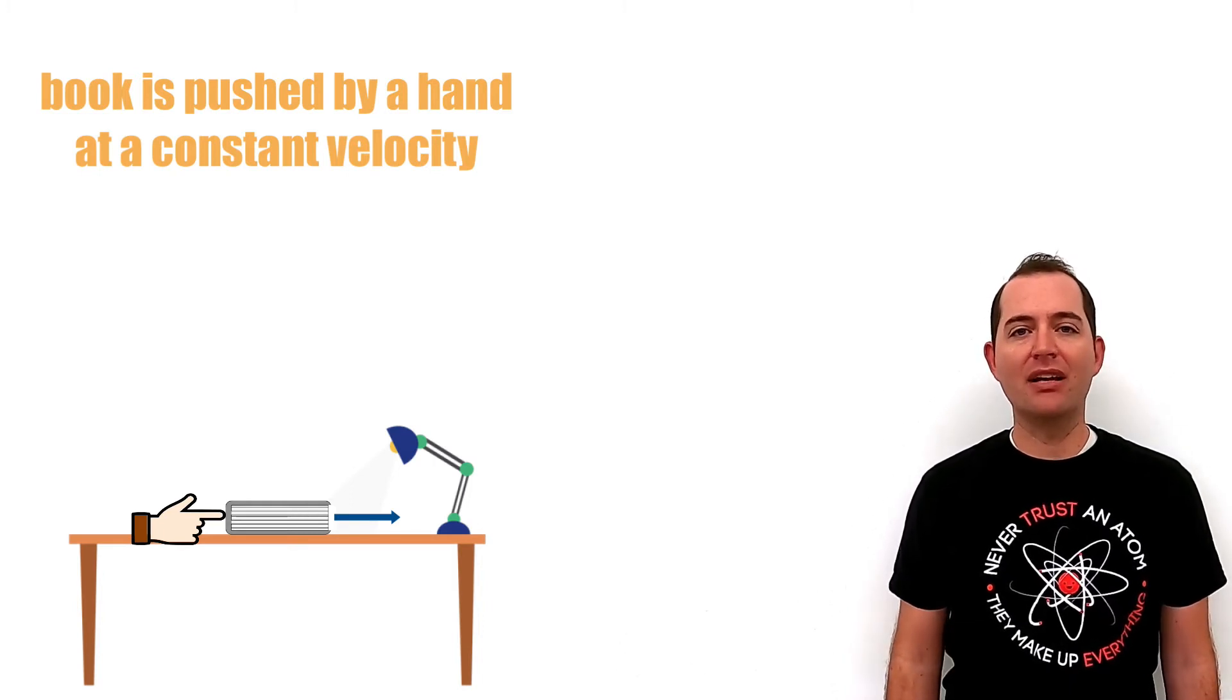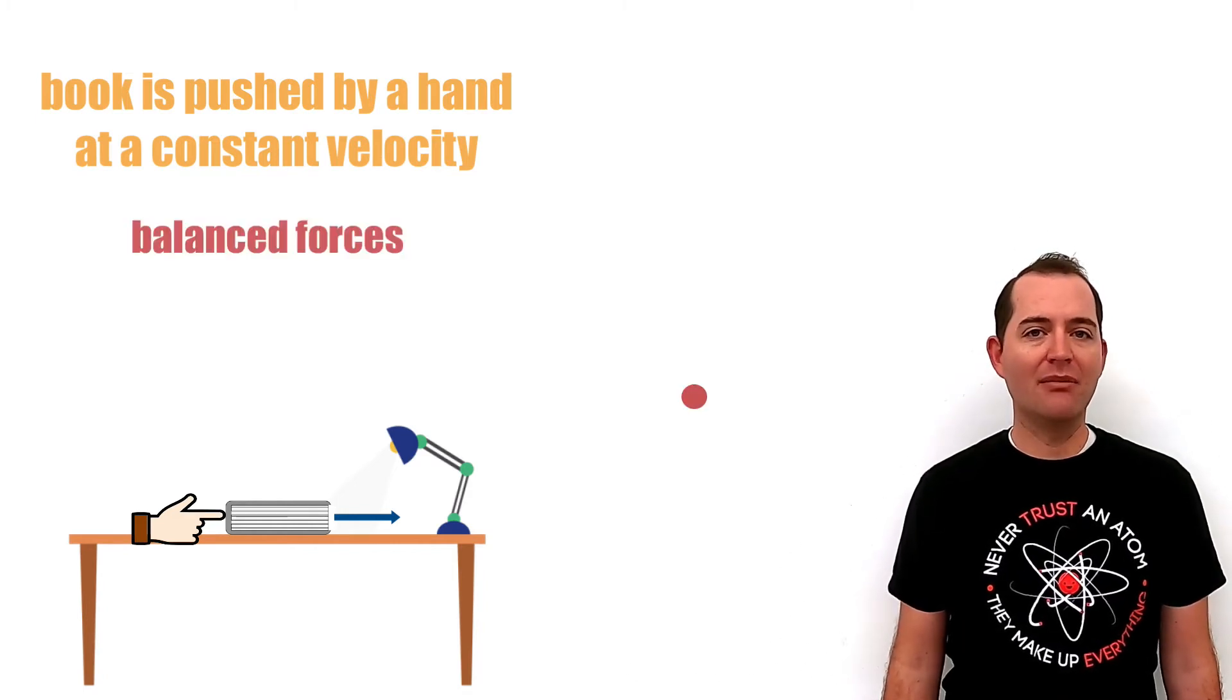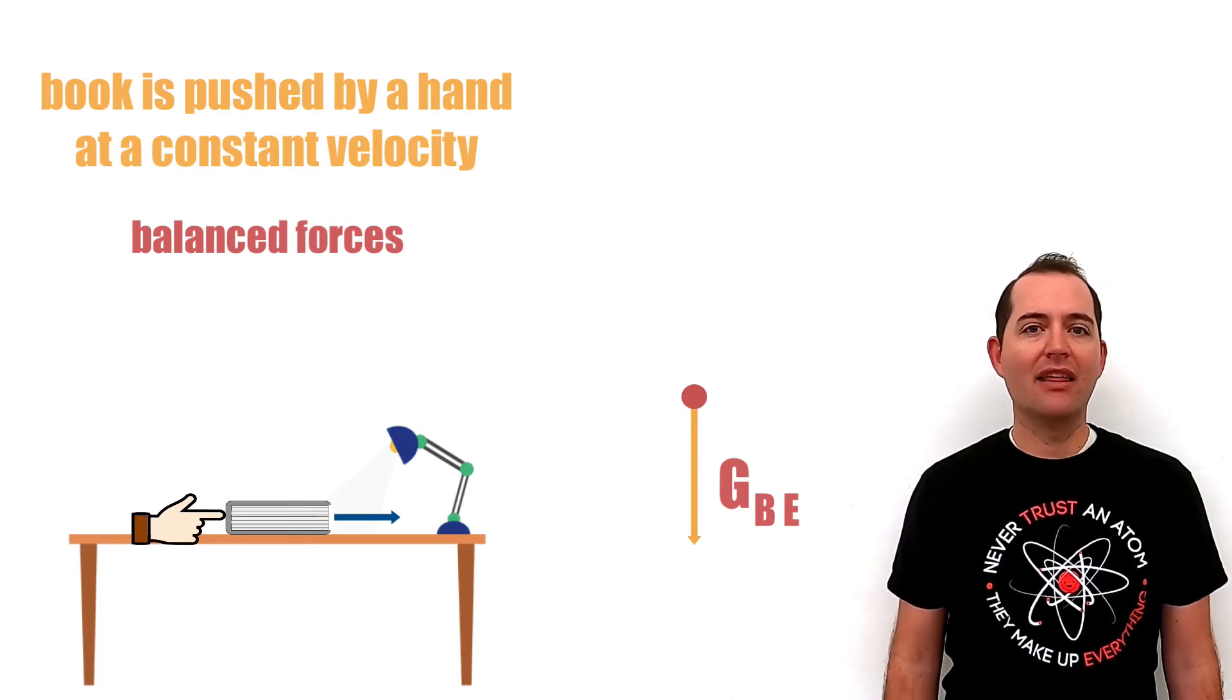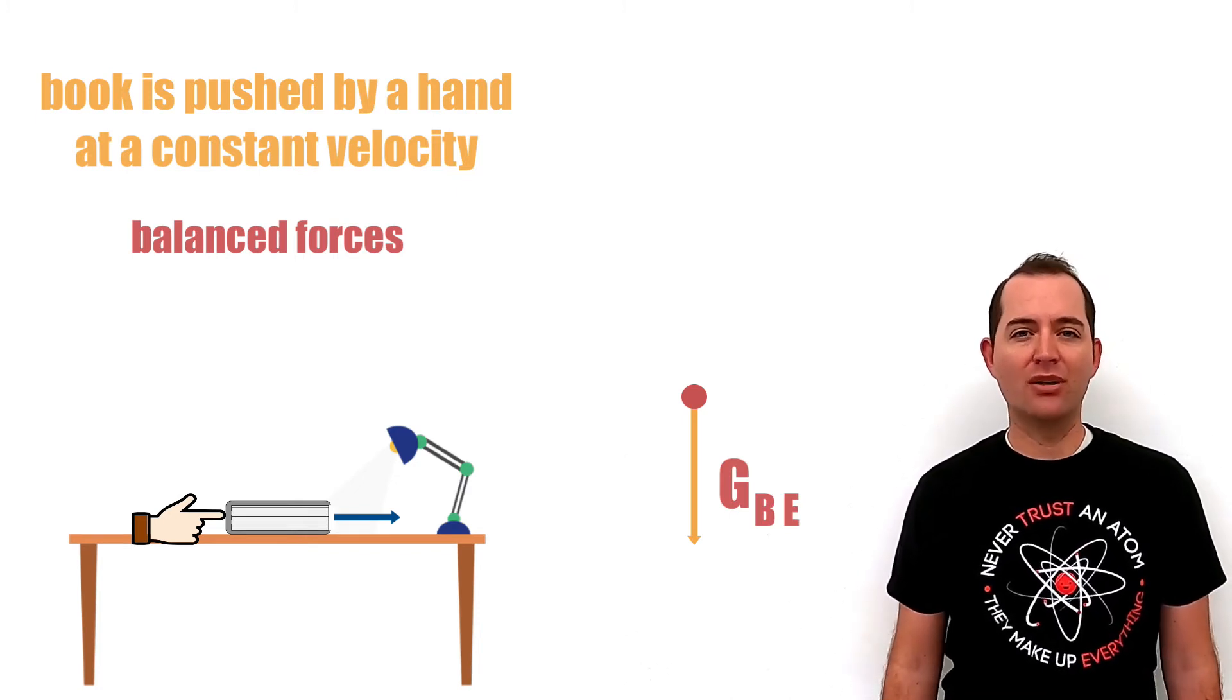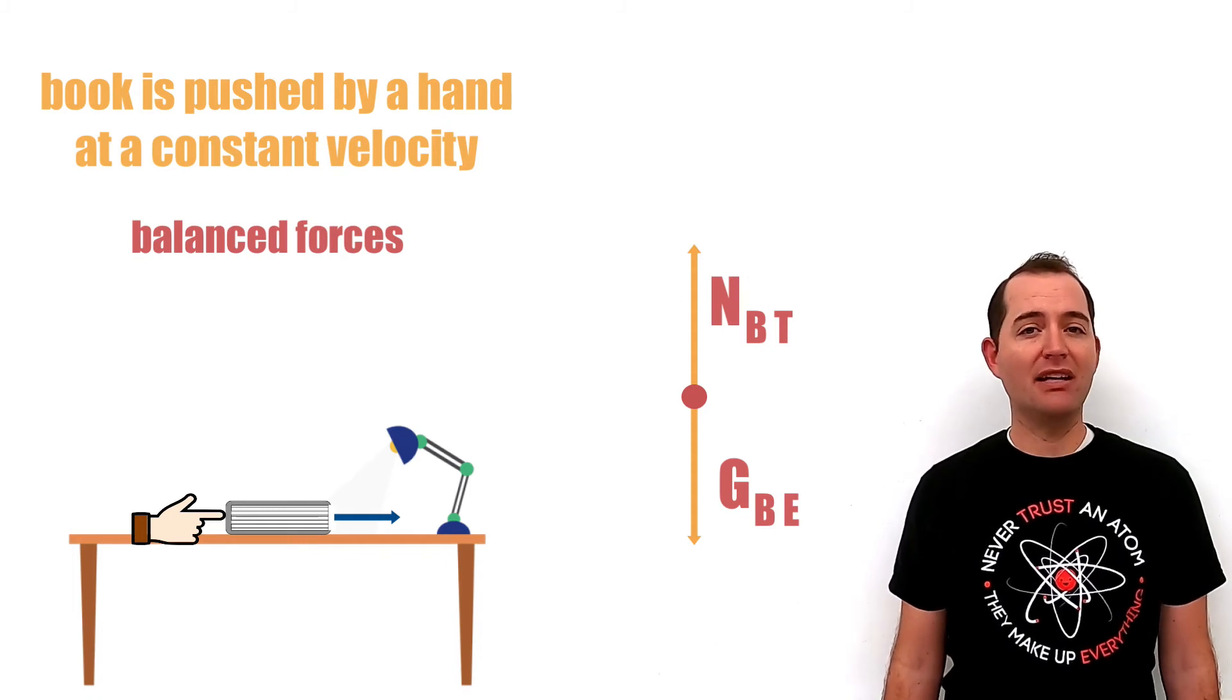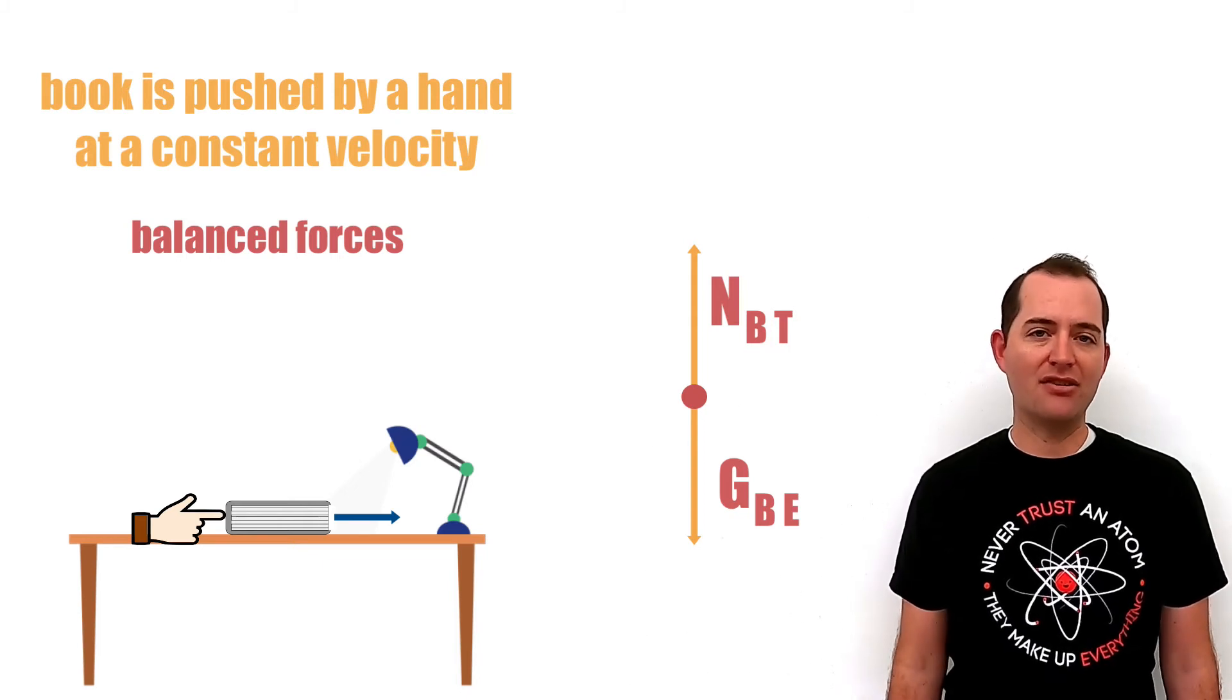Again, in this example, the object is not accelerating, so we will have balanced forces. In this free body diagram, we have gravity acting on the book by the earth. This is a downward force towards the center of the earth. We also have the normal force acting on the book by the table. This is perpendicular to the surface of the table and is equal in magnitude or size to the gravitational force.